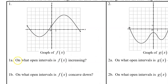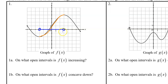Number 1, Part A. On what open intervals is f of x increasing? So we are looking for where f of x is rising from left to right. We can see that f of x is increasing on this part of the graph. When they ask us for intervals like this, they are talking about input values. So f of x is increasing from negative 3 to positive 3.